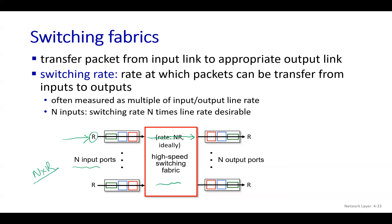Under ideal conditions, the switching fabric should have a switching rate of N×R — only then will it forward packets from input to output port without delays. If the switching rate is less than N×R, the input port transmission rate is higher than the fabric's capacity, meaning the fabric is slow and packets will get queued at the input ports.